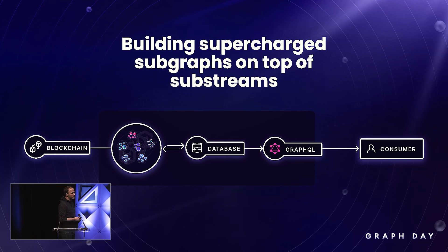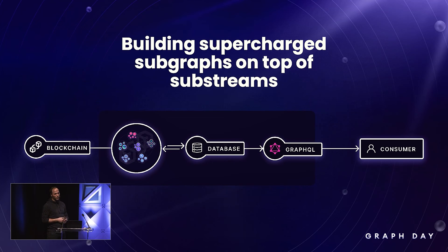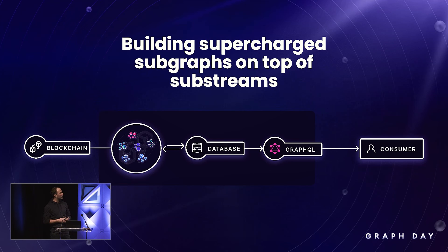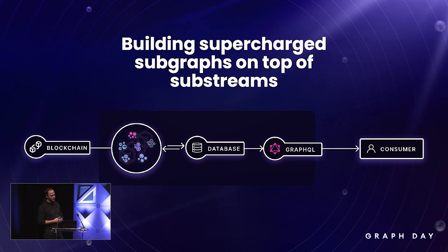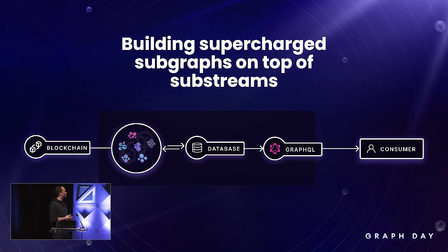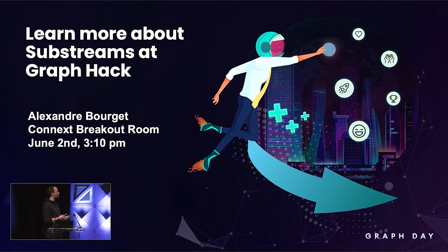That leads me to the next question: how does this fit with the current model? Substreams are not a replacement for subgraphs — in fact, they are what is going to feed subgraphs. In the future, when you are building a subgraph, you will consider that as the final indexing and aggregation layer around a series of substreams, combining the flow of data from all of these different sources into a human-digestible format that can then be consumed by your end-user application. This gigantic network will manifest itself with generic substreams maintained by the subgraph DAO, or very specific substreams maintained by individual protocol development teams, exposed to you for convenient reuse.